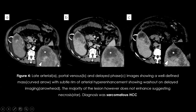The third case shows late arterial and portal venous phases with a relatively well-defined mass demonstrating subtle rim arterial hyper-enhancement and washout on delayed phases. A small speck of hyper-enhancement is present, but the majority of the lesion is necrotic. This was a proven case of sarcomatous HCC, which is predominantly necrotic but demonstrates thin peripheral hyper-enhancement with washout.